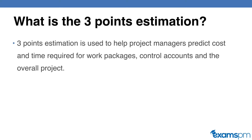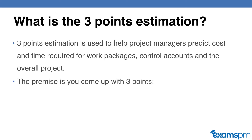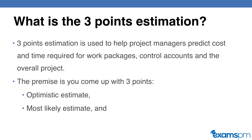In order to help project managers better predict the cost or time required for a specific work package in your project, or the project overall, sometimes it will be more accurate to come up with three points of estimation and then take an average of them, rather than just come up with one point of estimation. The premise is that you will come up with three points: an optimistic estimate, the most likely estimate, and the pessimistic estimate.